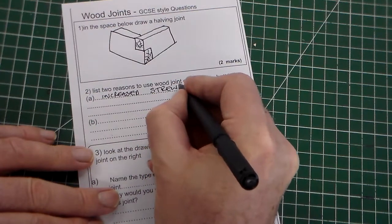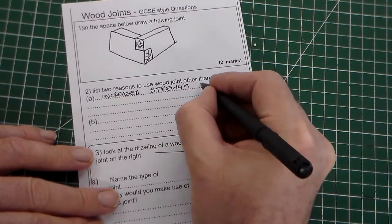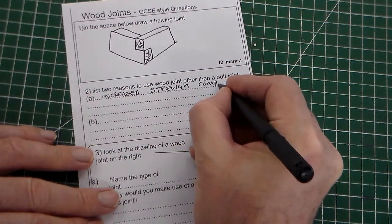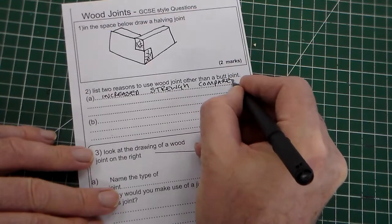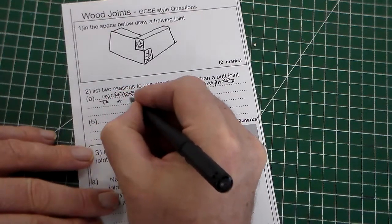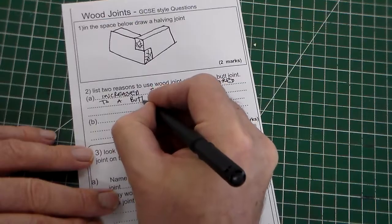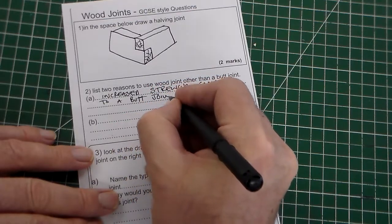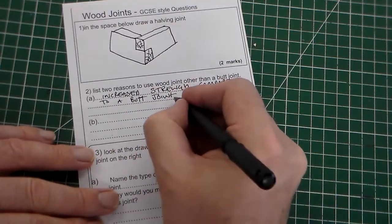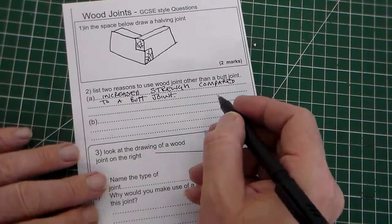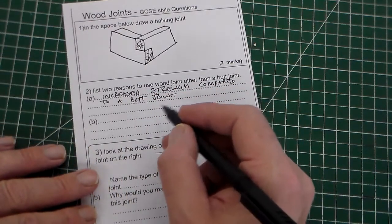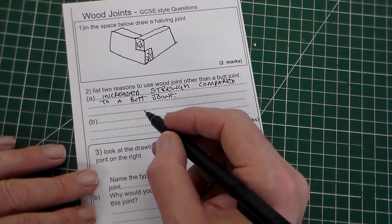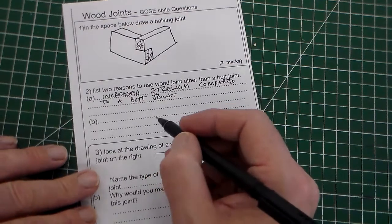Increased strength compared to a butt joint. Obviously, you're increasing the surface area of the two faces, so you've got more glue, you've got more joint. So it's stronger.